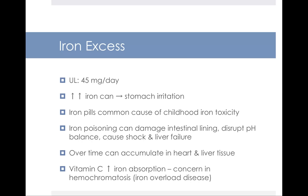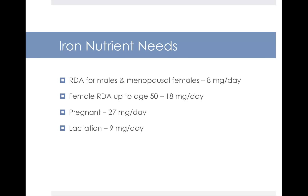Over time, iron can accumulate in your heart and liver tissue. Remember, one of the functions of vitamin C is that it enhances or increases iron absorption. There is a very rare condition called iron overload disease, hemochromatosis. Those people need to be careful, because we don't want them to absorb a lot of iron. So having a lot of vitamin C in the diet can actually be problematic for them, because it promotes iron absorption. For the rest of us, though, having vitamin C in the diet is a good idea, because we want it to help enhance our iron absorption.